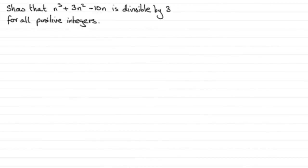Welcome to another video in my series on divisibility tests, where we look at proving if something is divisible by a particular number and use mathematical induction to prove it. The example here requires us to show that n cubed plus 3n squared minus 10n is divisible by 3 for all positive integers.